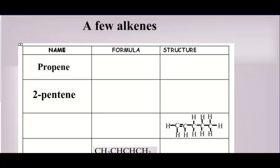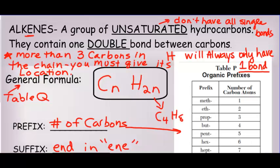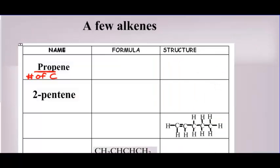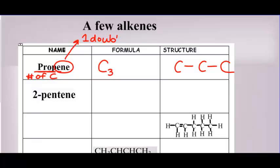So we're going to try a couple of alkenes. Let's start with propene. 'Prop' — the prefix tells you your number of carbons. Go to Table P and look up 'prop,' and it says three. So that means we have three carbons, C3. We draw three carbons bonded together, starting with all single bonds. The E-N-E tells you there is one double bond between carbons. When there are only three carbons, it doesn't matter if you put it here or here — it's the same place depending on what side you're viewing from.